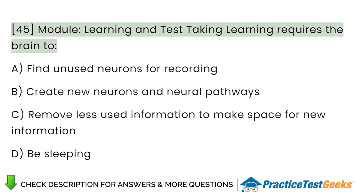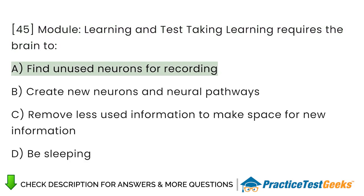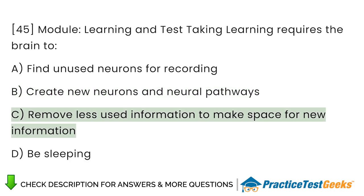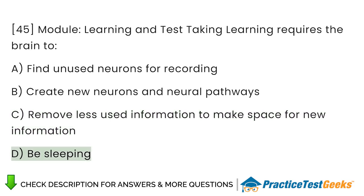Module: Learning and Test Taking. Learning requires the brain to: A. Find and use neurons for recording. B. Create new neurons and neural pathways. C. Remove less-used information to make space for new information. D. Be sleeping.